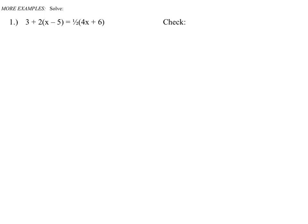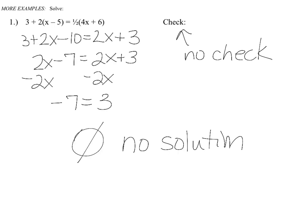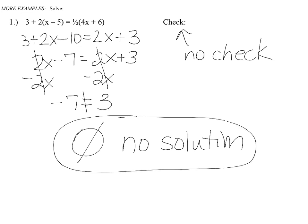If you did number 1 correctly, once you collected your variables, you'd end up with negative 7 equals 3. Since the variables cancel out on both sides and we're left with something that is not a true statement, the answer to this question has no solution. There is really no check — you can write 'no check' or leave it blank.